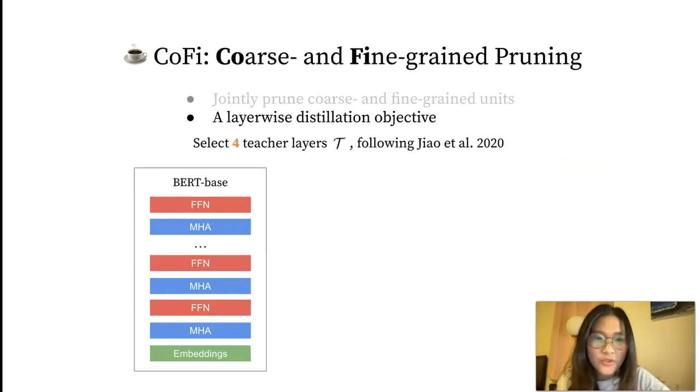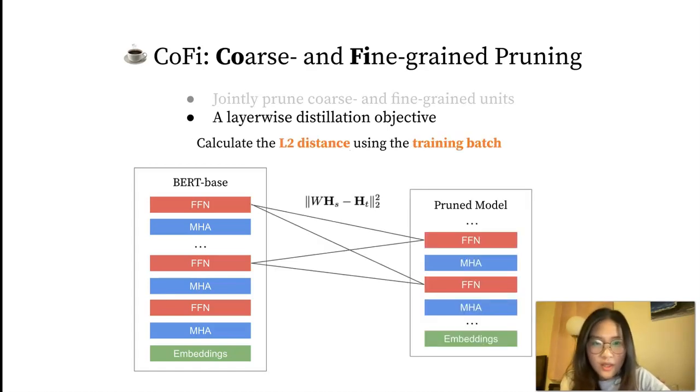We propose an alternative way of doing layer-wise distillation. First, we select four teacher layers to distill from, denoted as set T, simply following tiny BERT. We then calculate the L2 distance between the selected teacher layers and every student layer with the current training batch.